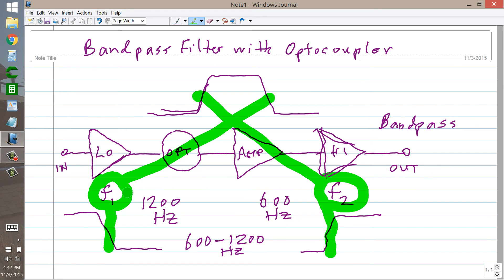But if you make F2 higher than F1, then you're not going to get anything through because either one or the other of these filters, either the low pass or the high pass, will choke the signal off and you'll get zero output.